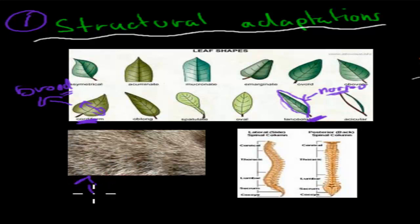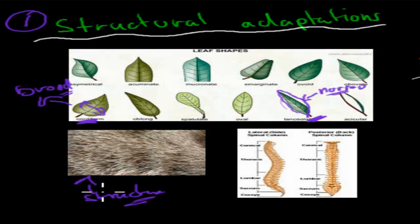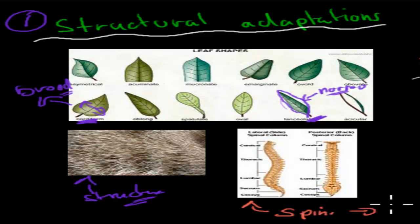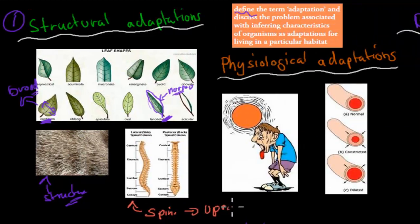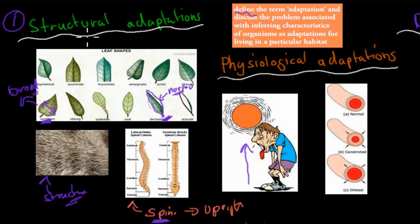Fur is also a structural adaptation — it's just part of the animal. Fur allows organisms to survive in colder environments because it's insulating. Even a spine is a good example of a structural adaptation. A spine allows us to be upright, which means we can stand and walk on land. Without the spine, we wouldn't be able to walk on land.